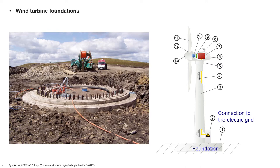The second important component of a wind turbine is the connection to the electrical grid. Variable speed wind turbines can produce more power than the current wind conditions can support by storing some wind energy as kinetic energy, which is later converted into electrical energy.